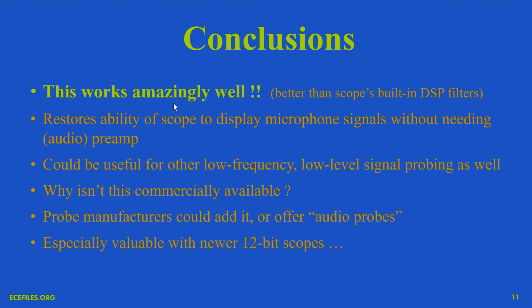In conclusion, this works amazingly well. Some scopes now have built-in DSP filters where you can switch in a low-pass filter, but this works a lot better than that — with the scope I have, the DSP option was way too slow and just didn't work at all. I now have the ability with my scope to just hook up to a microphone without needing an audio preamp or anything like that. My scope has 12 bits — let's make use of them. While I did this for audio, it could be useful for other low-frequency, low-level signal probing — anything where you don't want to go above 100 kHz or a couple hundred kHz, and where the amplitudes you're dealing with are in the millivolt range.